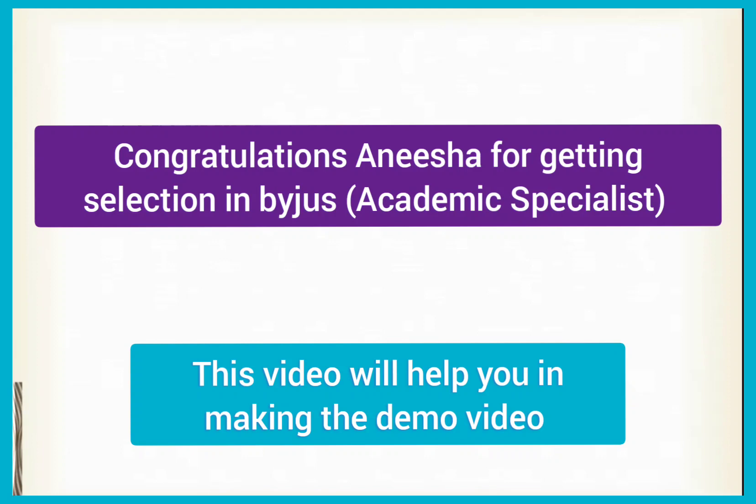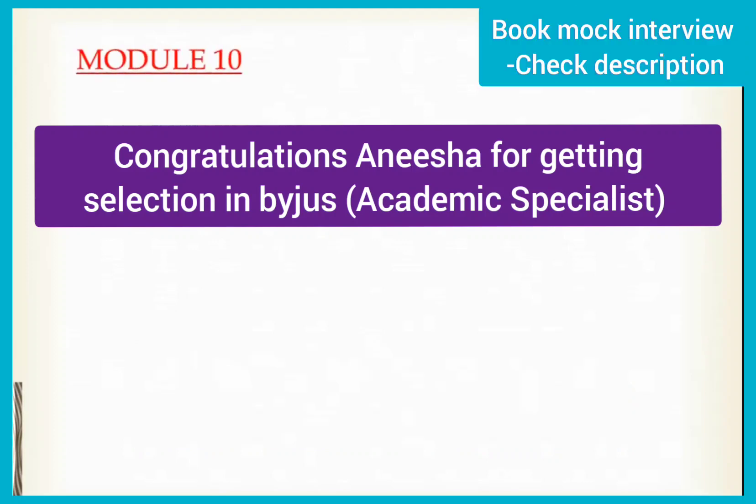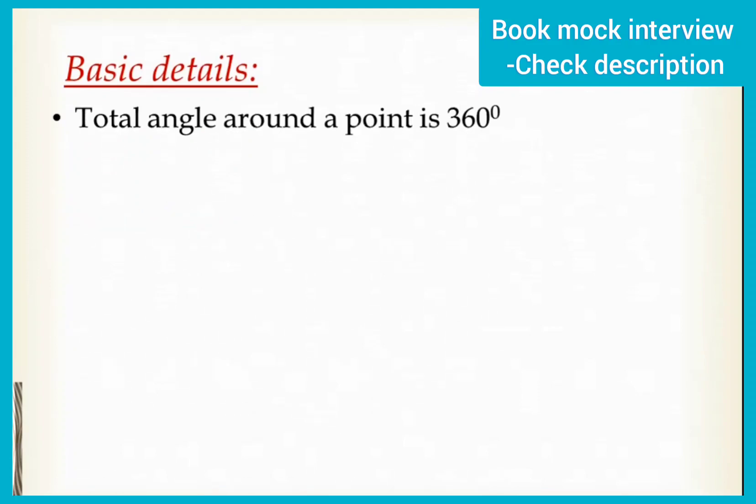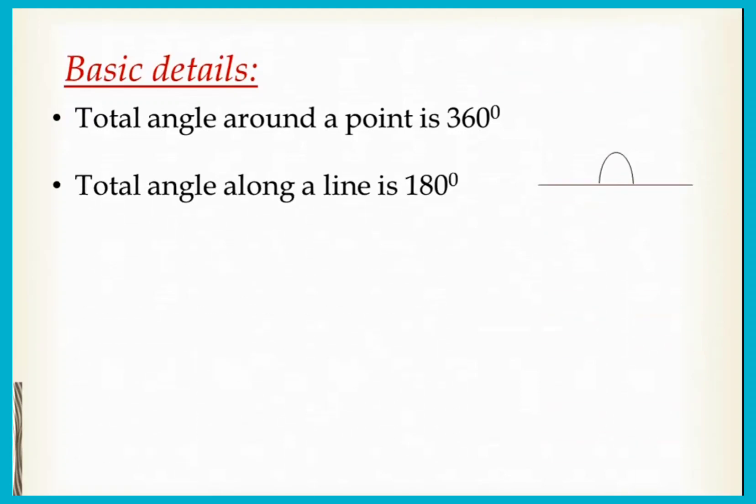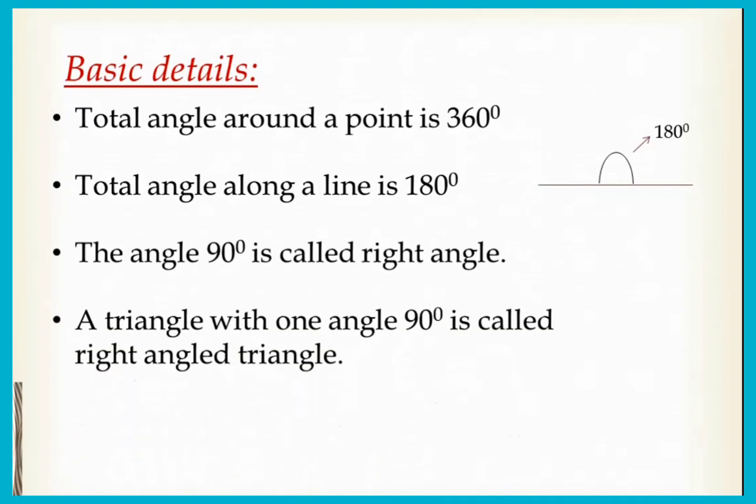First of all, I welcome you to Module 10: Circles. First we have to recall some basic details that you have already studied in earlier classes. Total angle around a point is 360 degrees. Total angle along a line is 180 degrees. The angle 90 degrees is called the right angle. A triangle with one angle 90 degrees is called a right angle triangle.